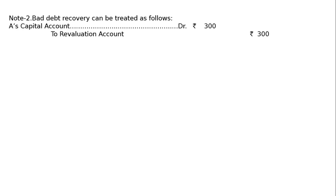Read part C: No entry has been passed in the books in respect of a debt of ₹300 recovered by A from a customer, which was previously written off as bad in the previous year. The amount is to be paid by A. This means a debtor owed ₹300, did not pay, so we wrote it off as bad debt — journal entry: bad debt account debited to debtor's account. Now partner A collected that ₹300 cash but did not deposit it into the firm.